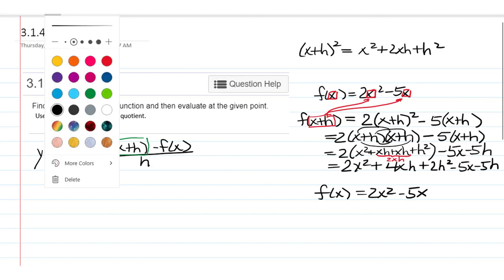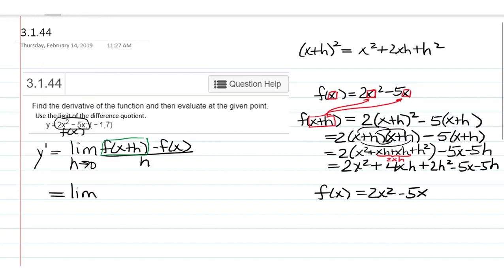Okay, so let's plug that into our expression. So, we have the limit as h goes to 0 of 2x squared plus 4xh plus 2h squared minus 5x minus 5h. That's the f of x plus h part. And then from that, we're going to subtract this guy here.